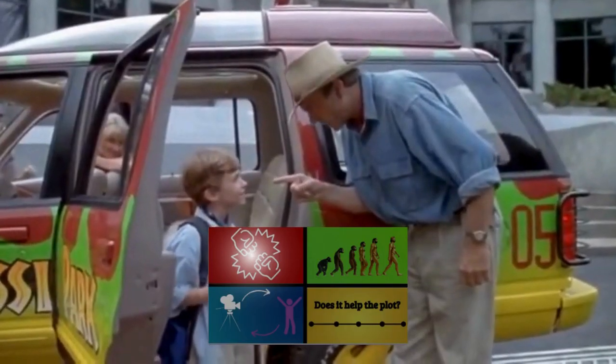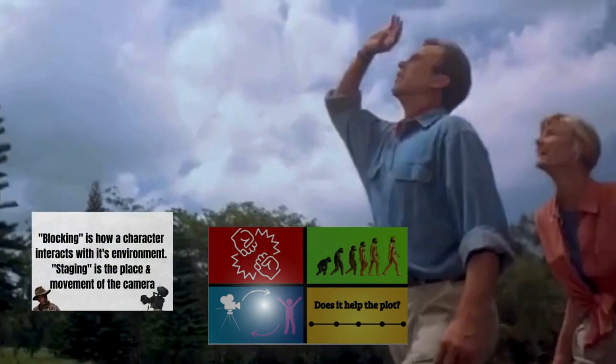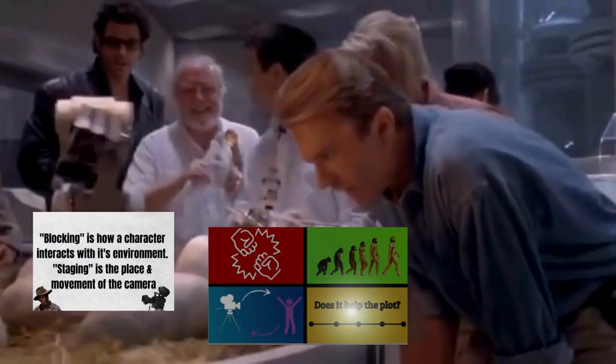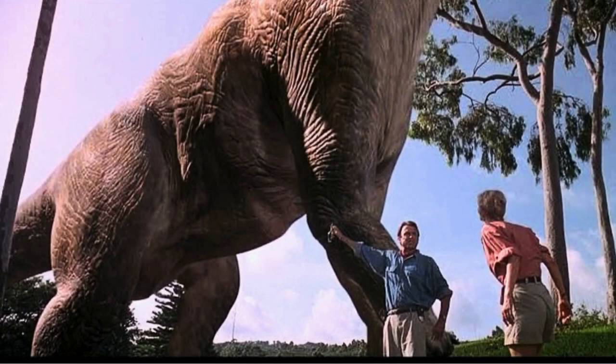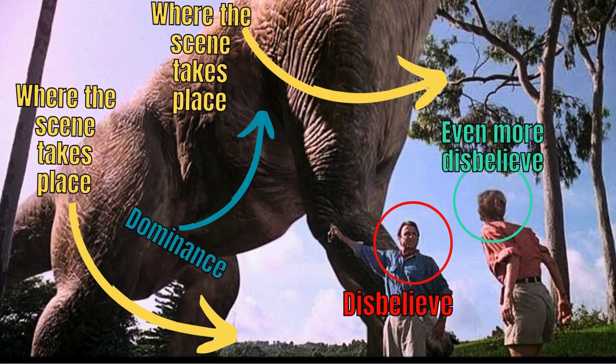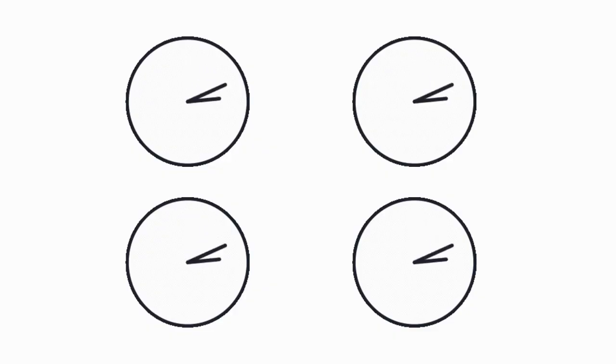If we take Alan Grant for example, you have conflicts, character development, blocking and staging, and plot function. Spielberg did explain the film with extreme clarity through visual storytelling, especially if you can still understand it without much dialogue and 4 times less screen time.